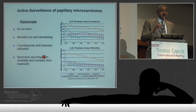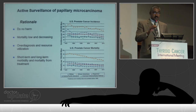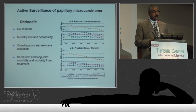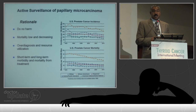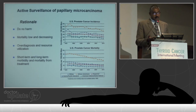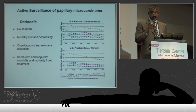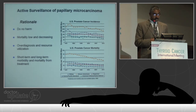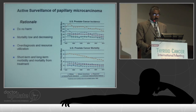What should we consider if we're going to do active surveillance? The principal thing is we do not want to do harm, so we want to select patients who will have low-risk disease. It makes sense to consider active surveillance because the mortality is low. And certainly there's a significant amount of resource utilization just for thyroid cancer management. It's really important to understand the short and long-term morbidities and mortality of treatment.